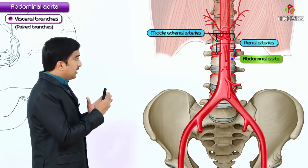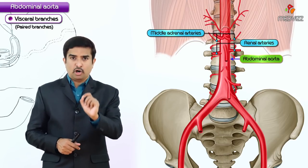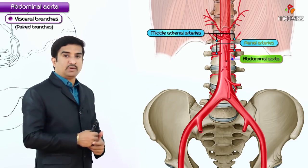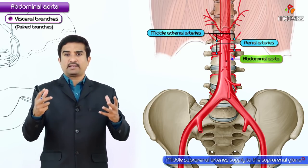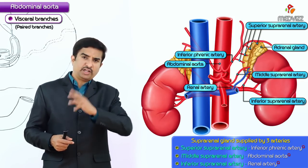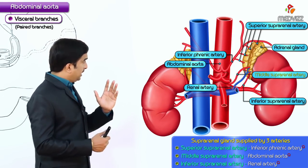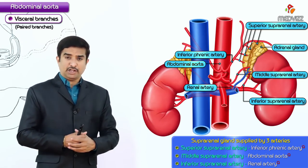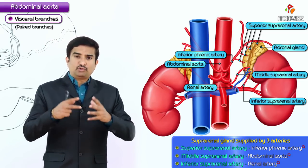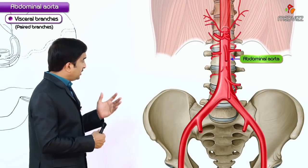The middle suprarenal arteries are small lateral branches of the abdominal aorta, arising just above the renal arteries. They form part of the multiple vascular supply to the suprarenal gland: the superior suprarenal artery from the inferior phrenic artery, the middle suprarenal artery from the abdominal aorta directly, and the inferior suprarenal artery from the renal artery — three arteries arising from three different branches.